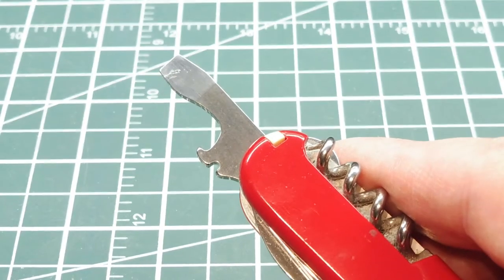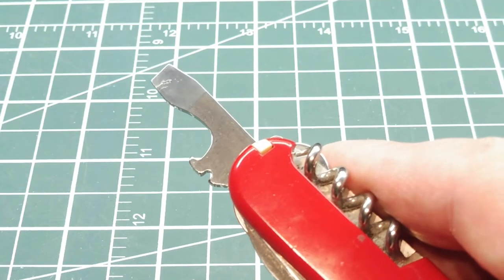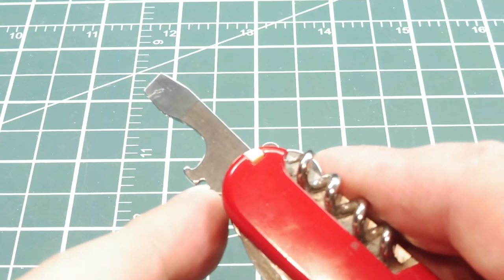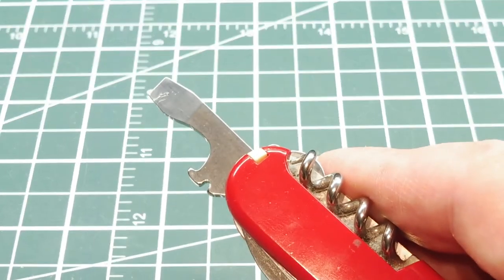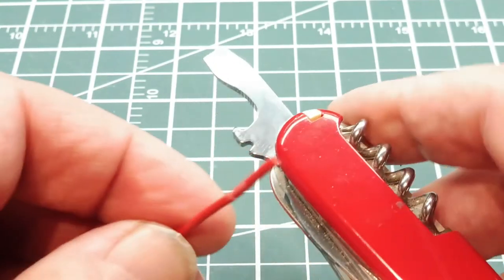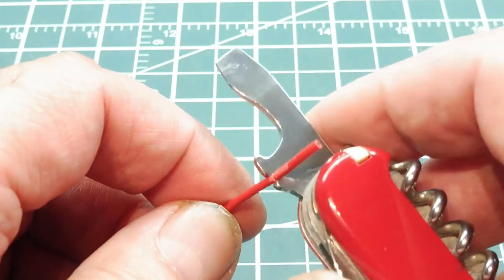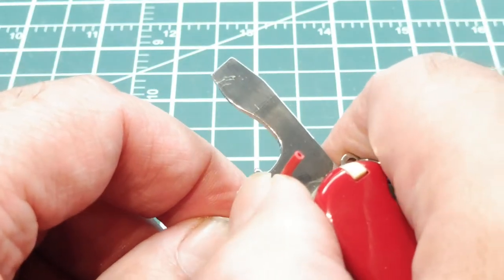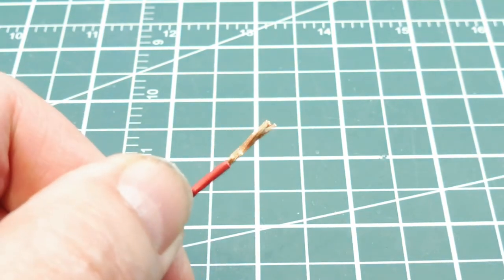If you carry around a Swiss Army knife with you, you'll probably notice this little notch on one of your blades. That's your wire stripper. You get your wire and you score it with the knife blade first, then you apply it to the stripping notch. You put your thumb on there and pull, and that will strip your wire.